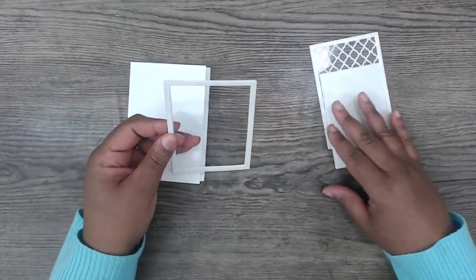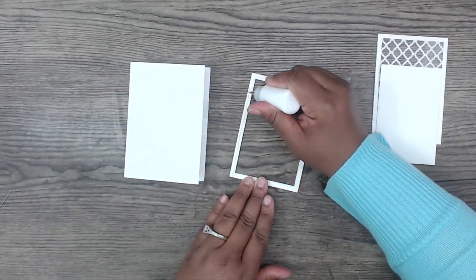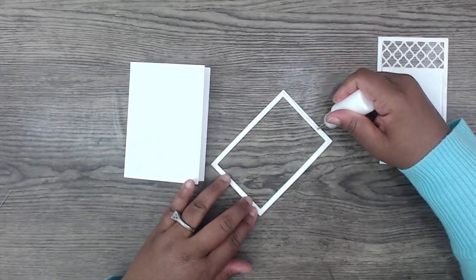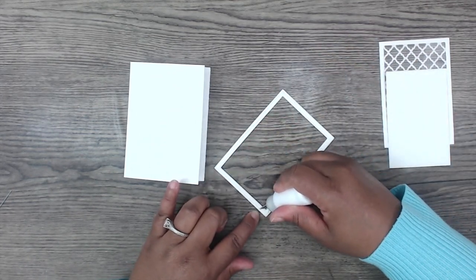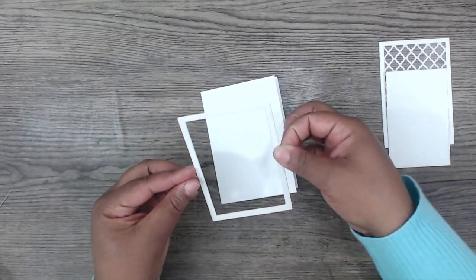Now it's time for the super fun part. We're going to add our nesting rectangular frame that we created earlier, attaching it with some wet glue. Be careful not to let the wet glue ooze out. And be careful when you're centering it on top of your card base. You want to kind of drop it and let it go.